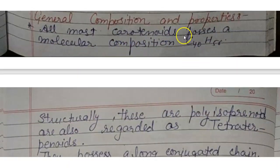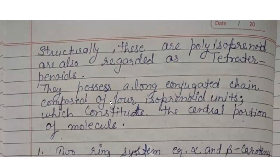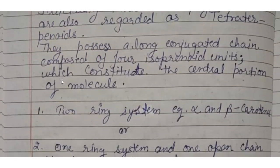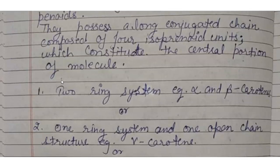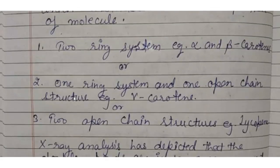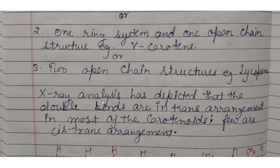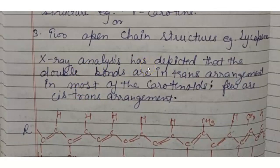The general molecular composition of carotenoids is C40H56. Structurally, they are polyisoprenoid and are also regarded as tetraterpenoids. They possess an extended conjugated chain composed of four isoprene units constituting the central portion of the molecule. There are two ring systems, for example alpha and beta carotene; one ring system and one open chain, for example gamma carotene; or two open chain structures, for example lycopene.